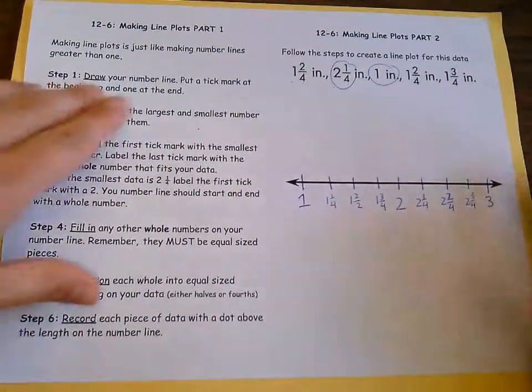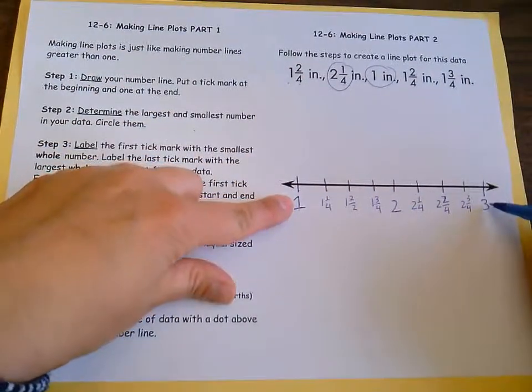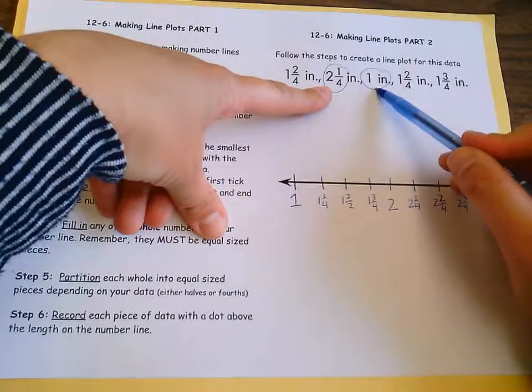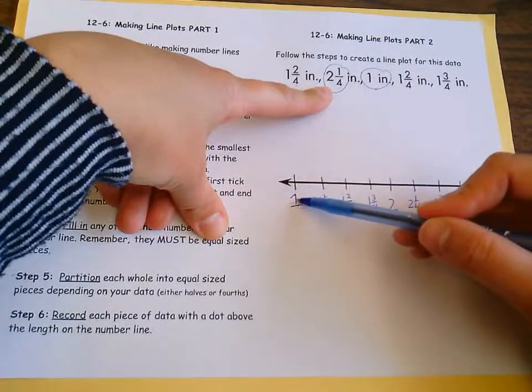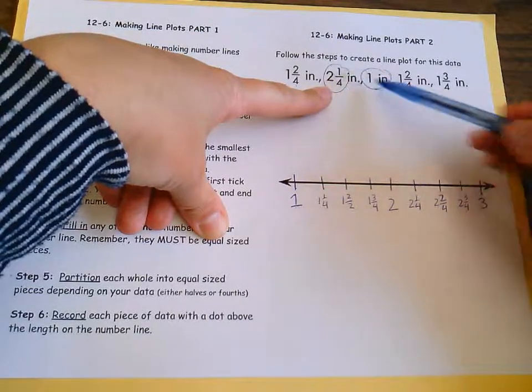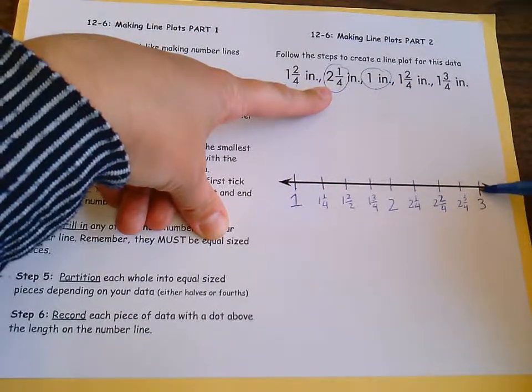All right, so let's just recap what I did. I labeled my number line with two tick marks. I found my largest number and my smallest number. My smallest number was already a whole number so I could use that whole number. My largest number was two and one fourth, so I bumped it up to the next full number, which was three.